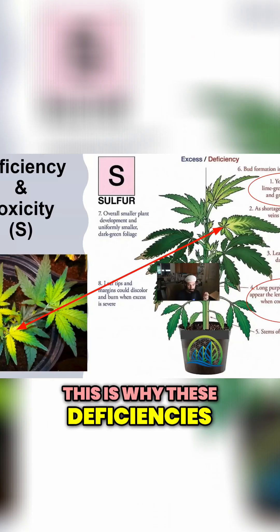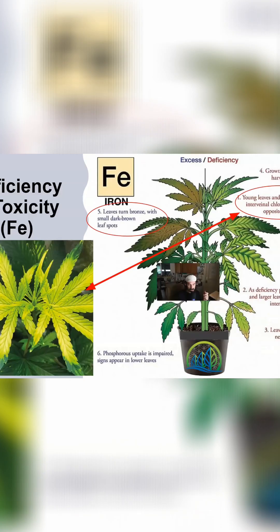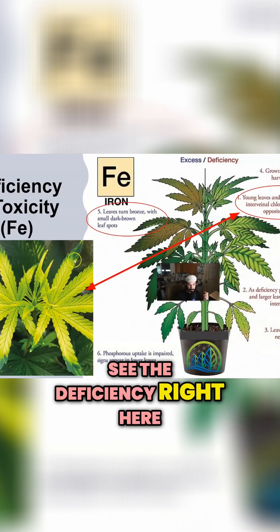This is why these deficiencies actually look very similar. This one's the sulfur right here, and this one's an iron. As you can see, the deficiency right here on the tips.